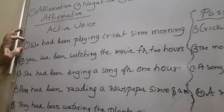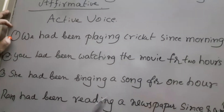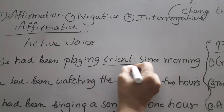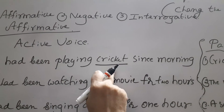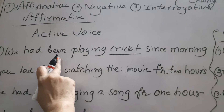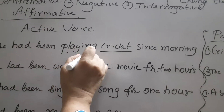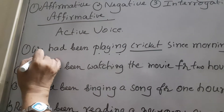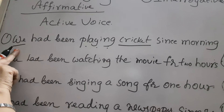We had been playing cricket since morning. Which is the object here? Cricket. Pick up cricket first. Cricket — Had been being — Played — Played. Had been being played by us. The changed form of personal pronoun 'We' is 'Us'.